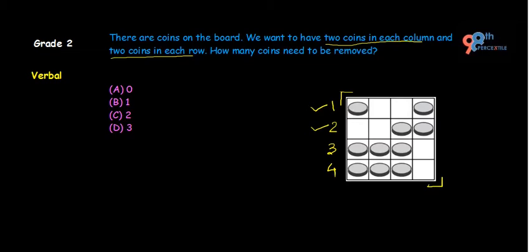Now let us move to the columns. Let us name our columns 1st, 2nd, 3rd, and 4th — we have 4 columns. In the first column we have 3 coins. In the second column we have 2 coins. In the third column we have 3 coins. And in the fourth column we have 2 coins. According to this observation, 1 coin needs to be removed from column 1 and 1 coin from column 3.